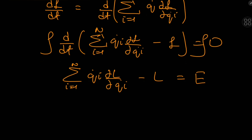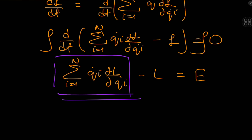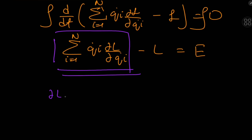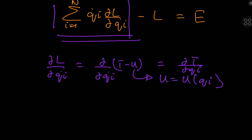Is this E the total energy? We don't know yet, but we can prove it with more math. Since L = T − U and the potential energy U is a function of the generalized coordinates only, we have ∂L/∂q̇ᵢ = ∂(T − U)/∂q̇ᵢ = ∂T/∂q̇ᵢ — the derivative of the total kinetic energy with respect to the generalized velocity q̇ᵢ.